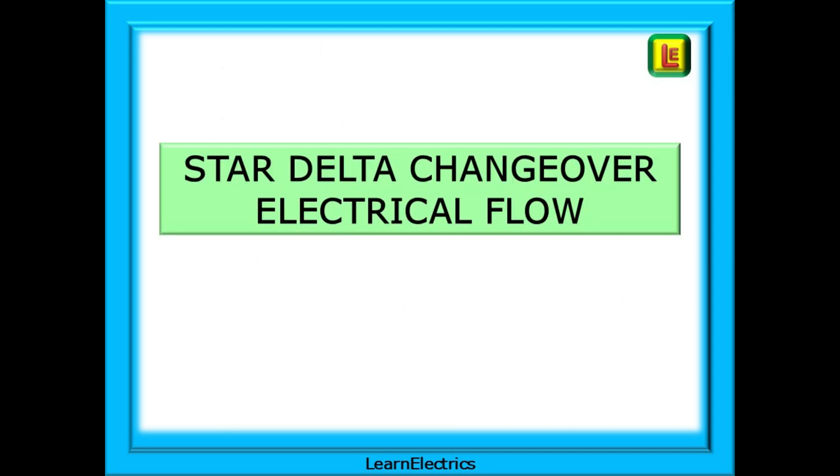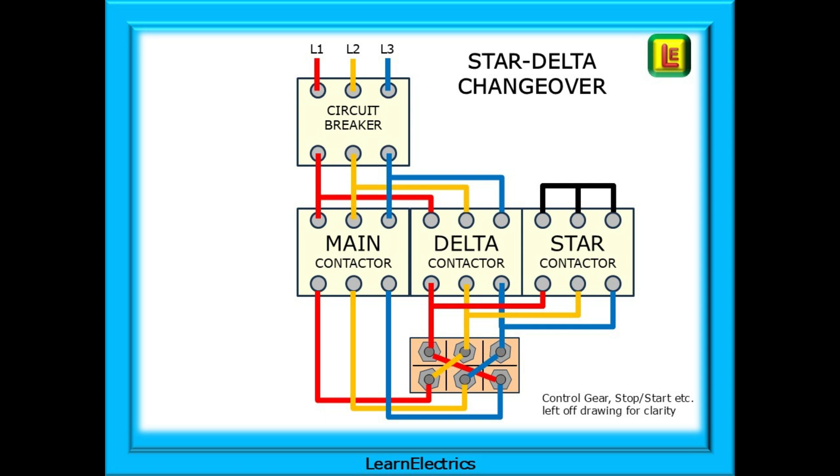Moving on, we now look at star delta changeover starters. It looks complicated at first but it's not. When we break it down, it's actually very easy to follow. Again, we've left off the control gear, stop start, etc., for clarity and better understanding of the basics. This time there are three contactors: a main contactor which must be activated in both star and delta modes. There is a star contactor which operates to start the motor turning. After a delay, the star contactor will drop out and the delta contactor will take over. Notice that there are no brass strips on the motor block, but now we have six power conductors, not three.